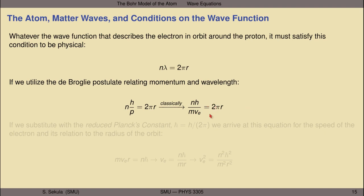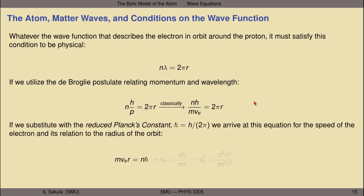Moving 2π over to the left side, we have h over 2π, which allows us to substitute with the reduced Planck's constant h-bar. Remember that h-bar is just h divided by 2π — you get this a lot when switching to angular quantities like angular frequency and wave number. Absorbing the 2π into the definition of h-bar, we arrive at the following equation for the speed of the electron and its relation to the radius of the orbit: m times v times r equals n times h-bar. That can be rewritten to solve for the speed of the electron — v_e equals n times h-bar over mr. And in preparation for relating this back to energy concepts, I'll square v_e, getting v_e² equals n²h-bar² over m²r².